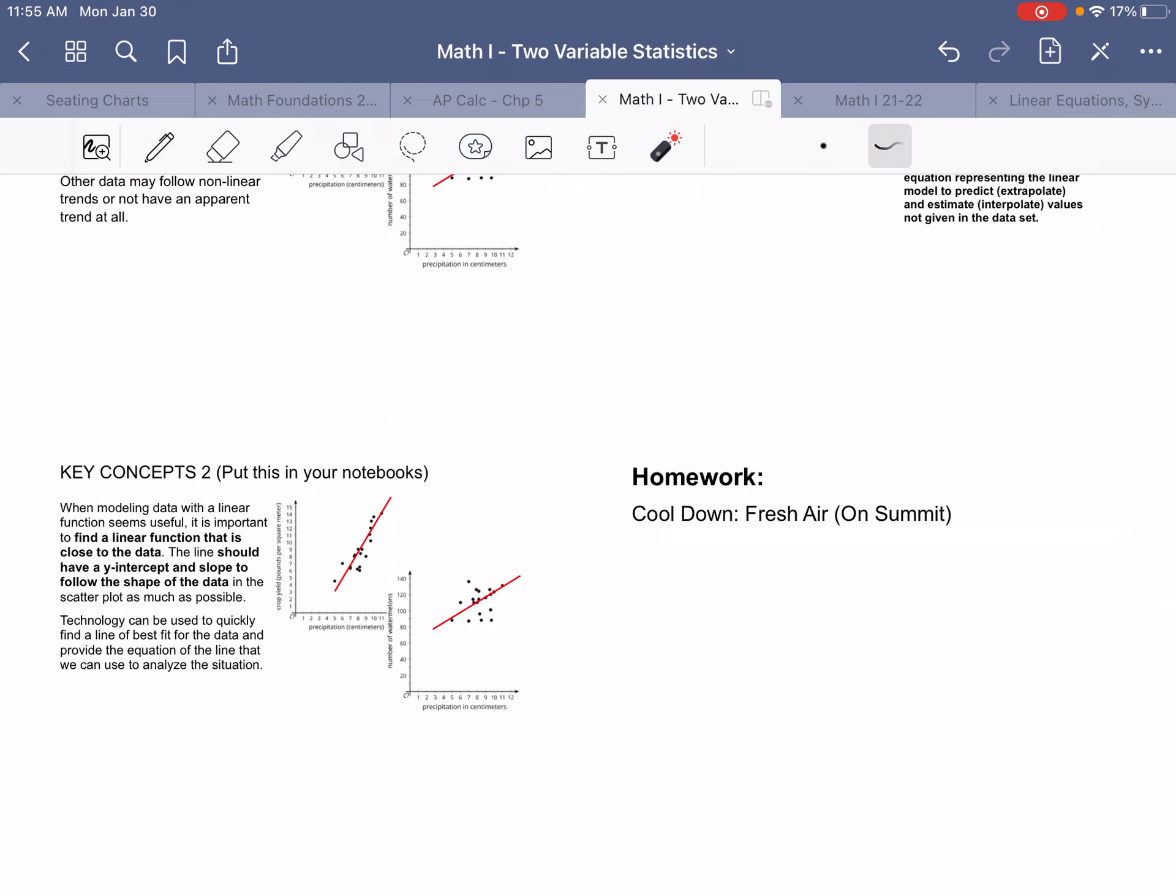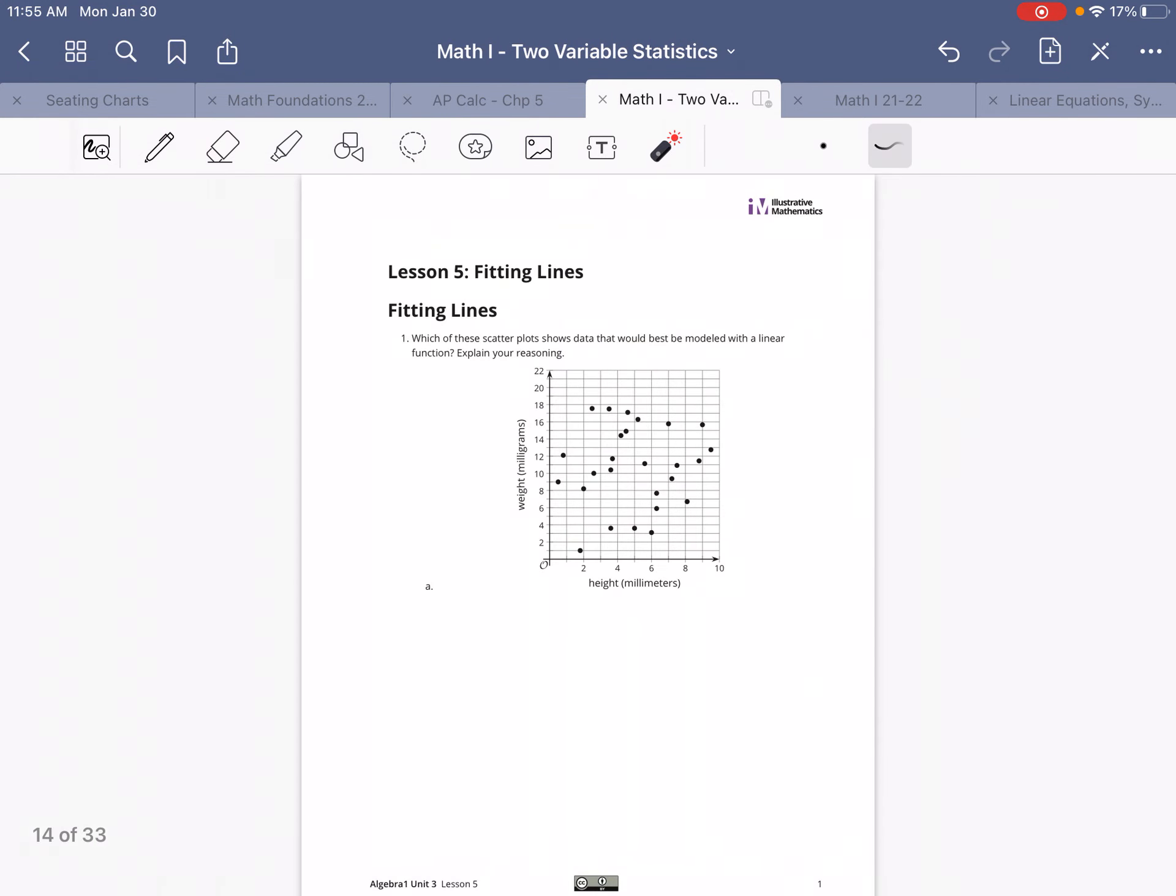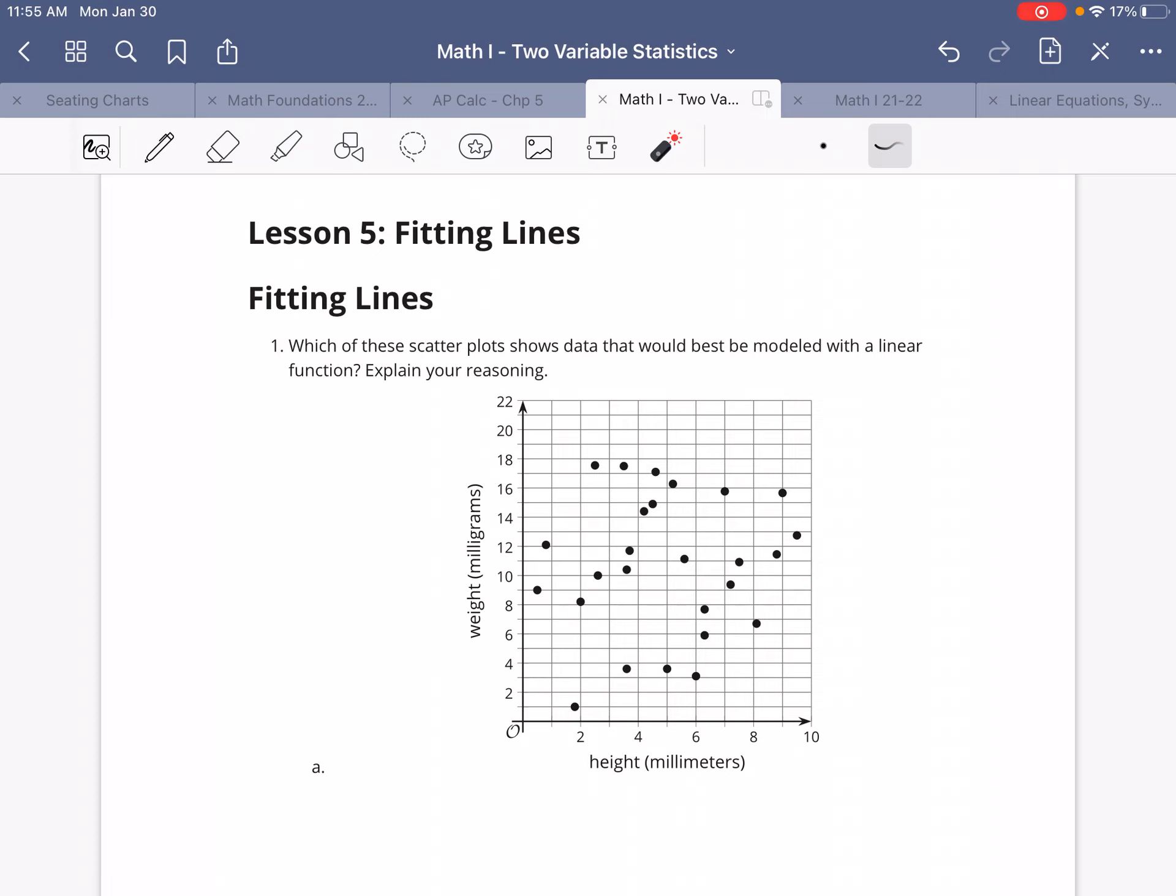So let's go take a look at the cooldown and talk about a couple of those things. So first of all, number one, which of these scatter plots shows data that would be best modeled with a linear function? What we're looking for is we're looking for a graph where the dots kind of follow a straight line.